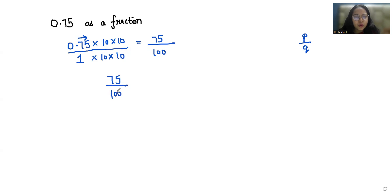Both numbers can be divided by 5 without giving any remainder. So 75 divided by 5: 5 times 1 is 5, then 25, 5 times 5 is 25. Similarly, this gives us 20.